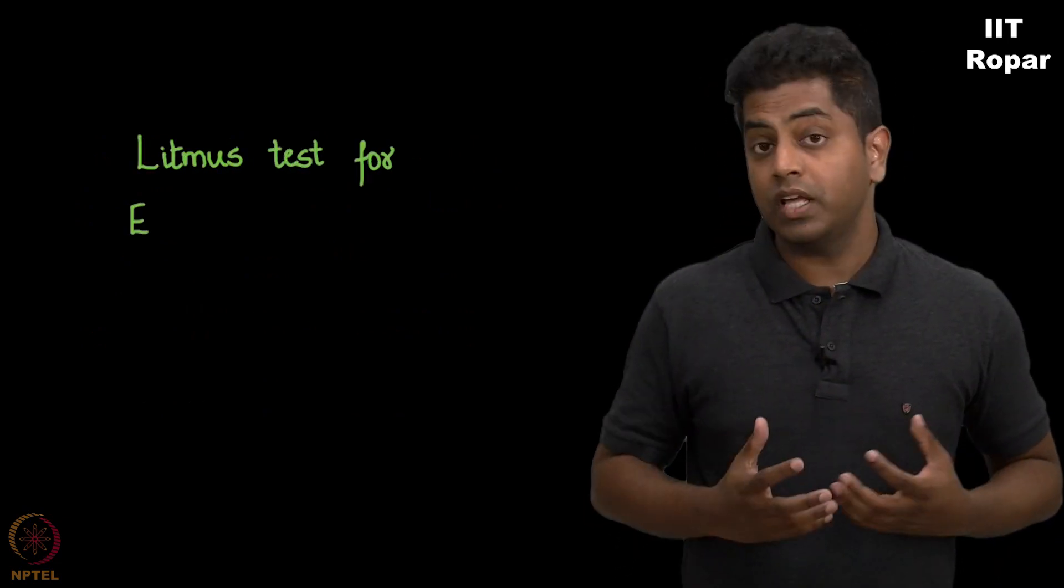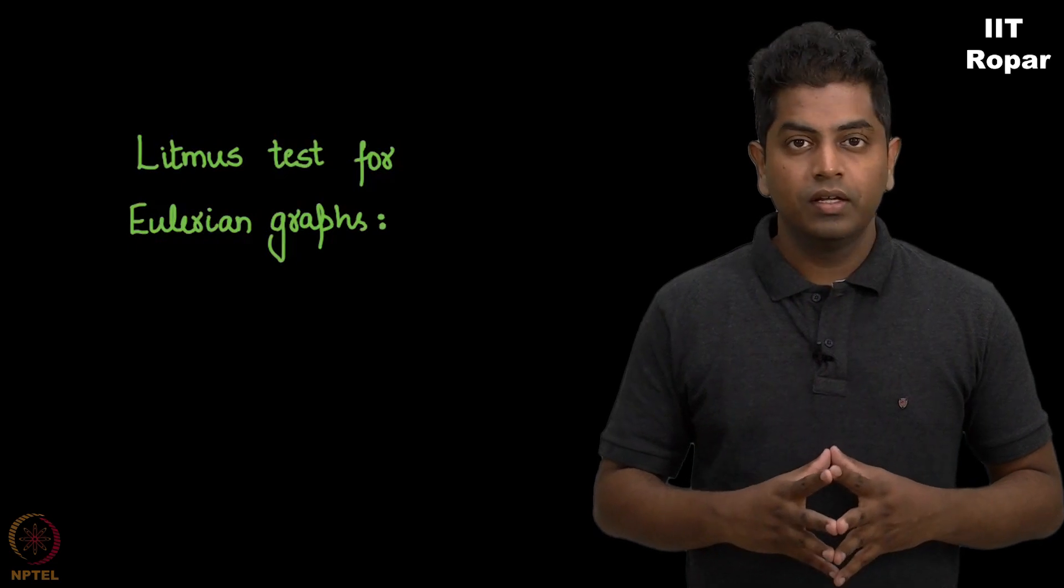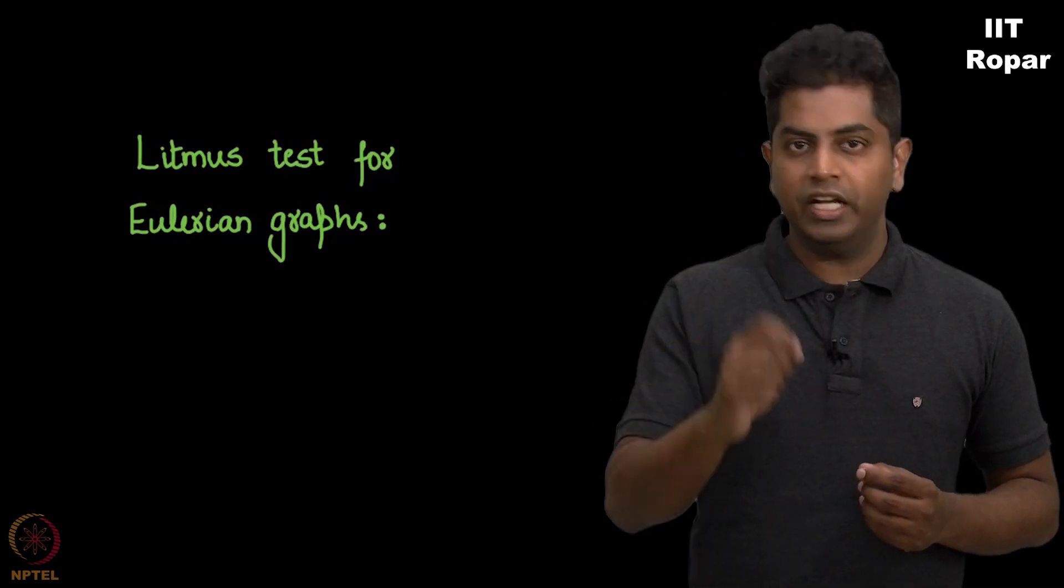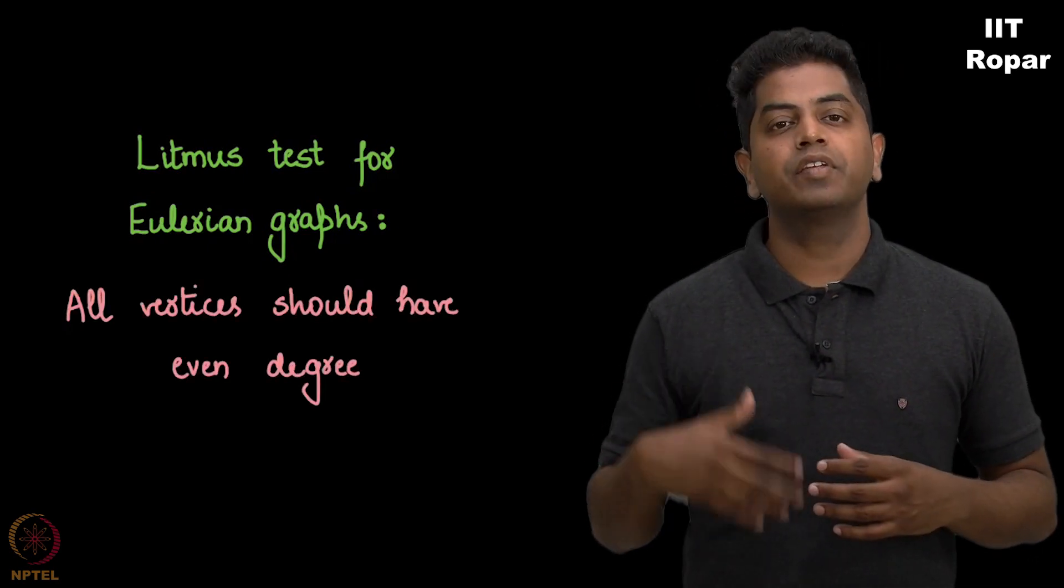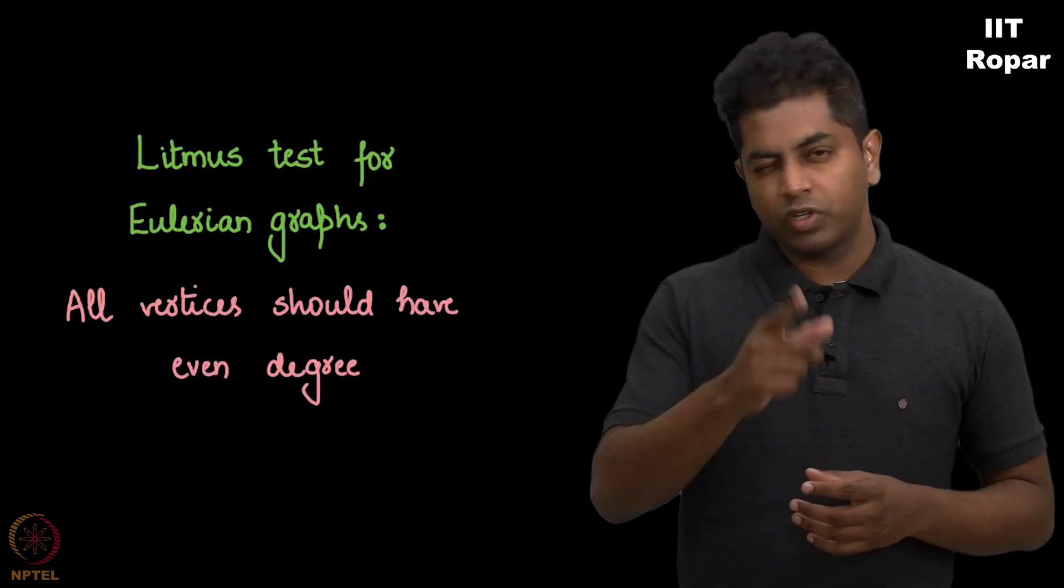We saw for Eulerian graphs there was a litmus test. We could say whether a graph is Eulerian or not just by looking at the degree of individual vertices. If they were all even, we would say the graph is Eulerian. The converse was also true.